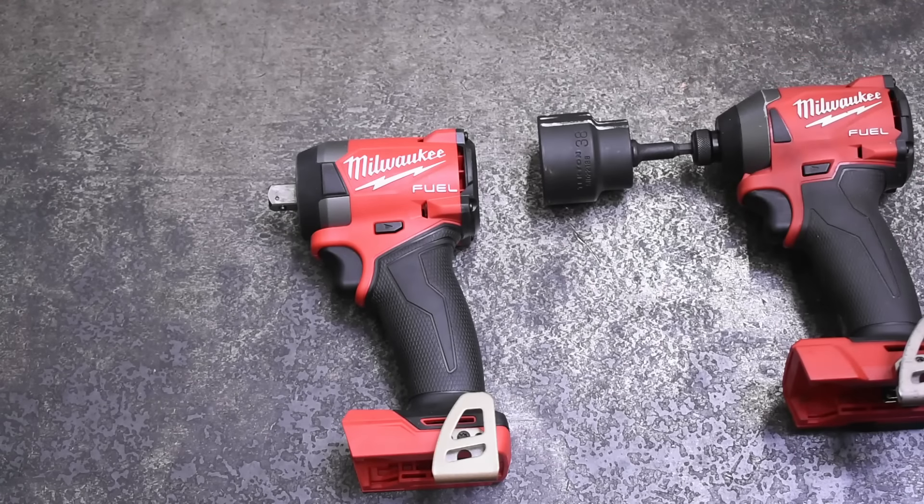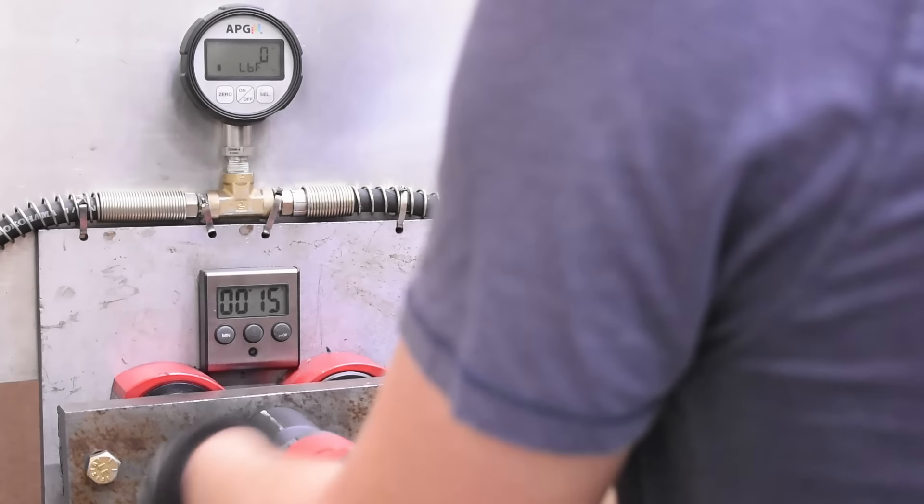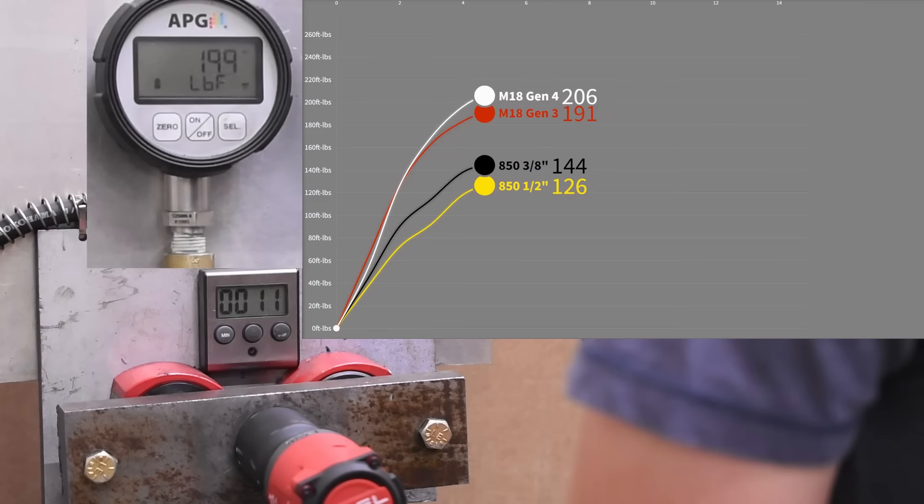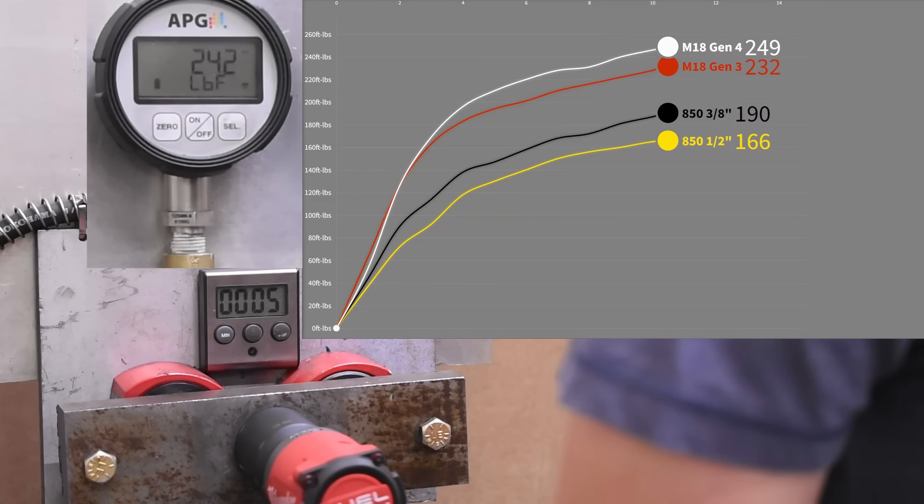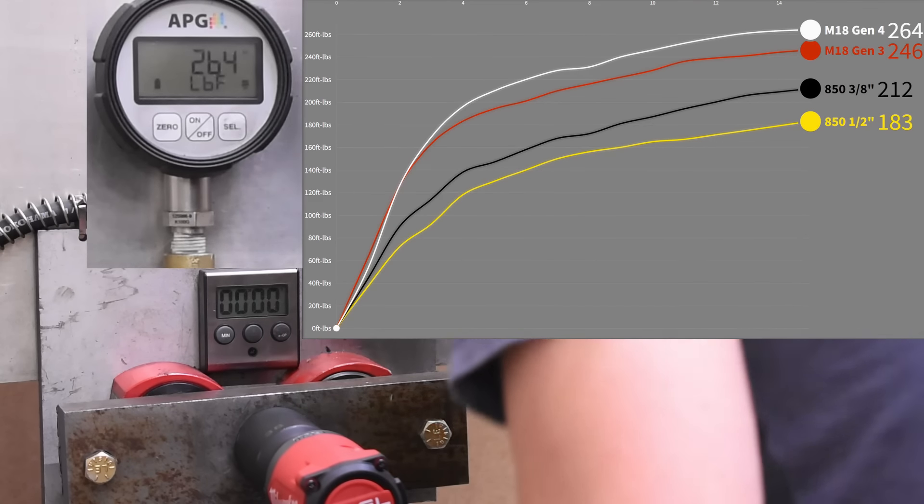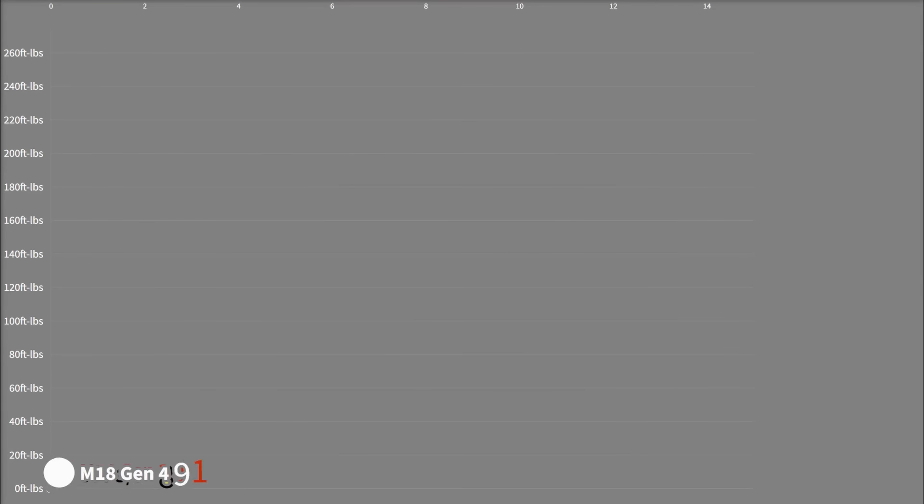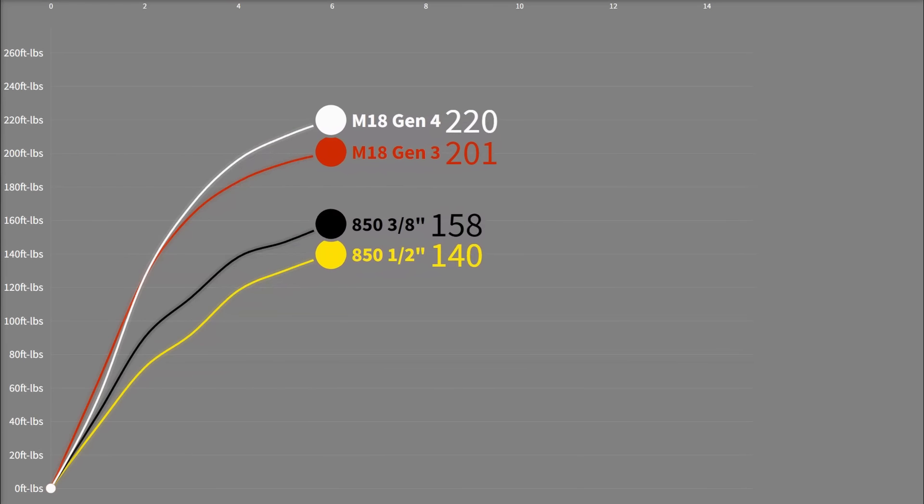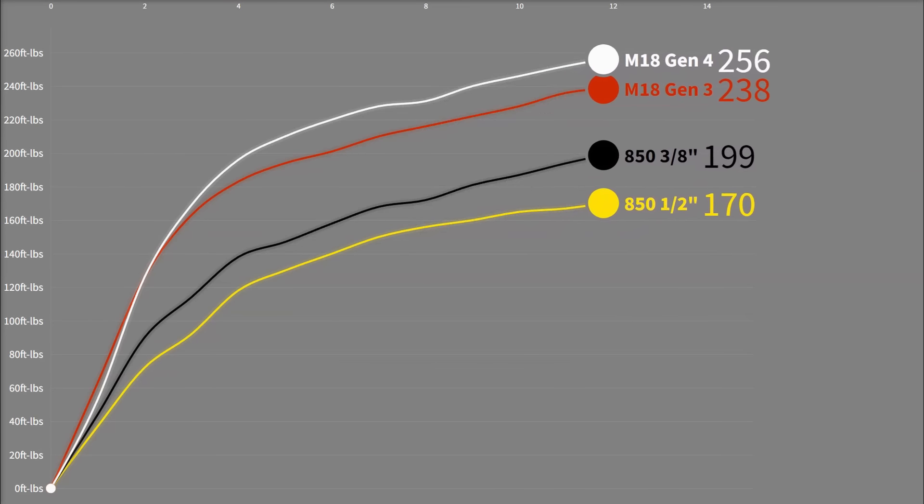Let's see if the Gen 4 can continue to squeak out a lead. Here is its final BCS test. 264 foot pounds with some better than seen before gains on the curve as well. We found in a best case scenario test the Gen 4 can do even better when the stars sort of align. These custom tools aren't quite as consistent as other off-the-shelf stuff.